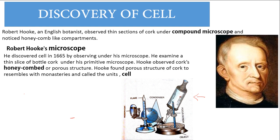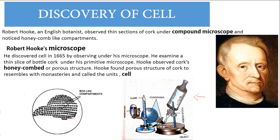He observed corks, honeycombed or porous structures. These boxes, these small boxes, box-like compartments are honeycomb-like structure or porous structures. Hooke found porous structures to cork to resemble with monasteries and called these small units, cells.